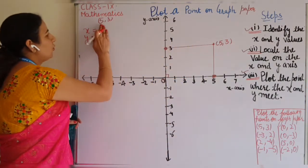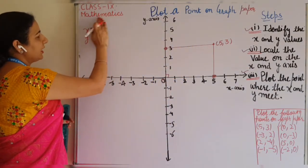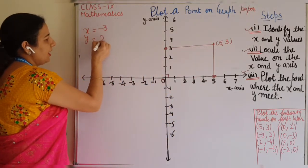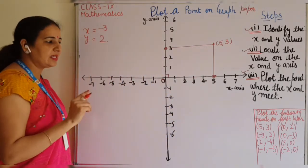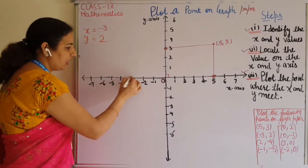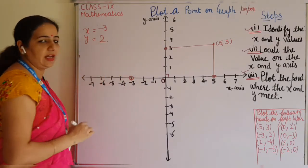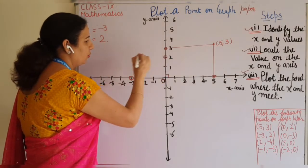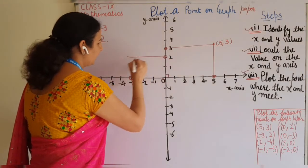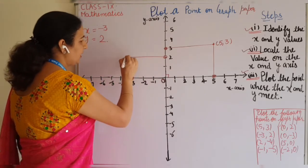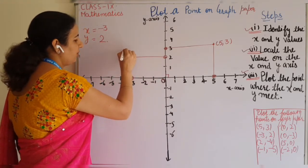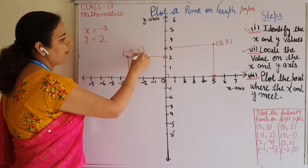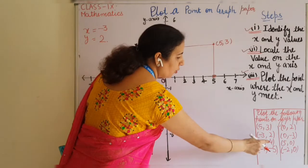The second example point is (-3, 2). The value of x here is minus 3 and y is 2. So look on the x-axis where x is minus 3 — here it is — and y is 2 — here it is. Just extend these two lines and when they intersect, that point is known as (-3, 2).